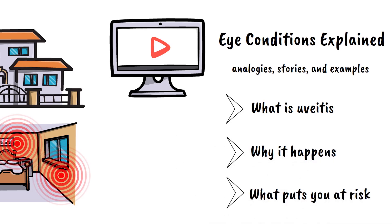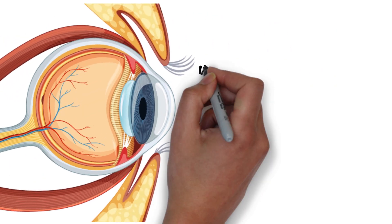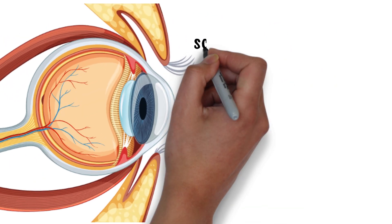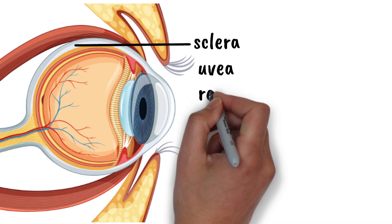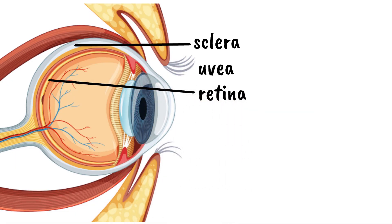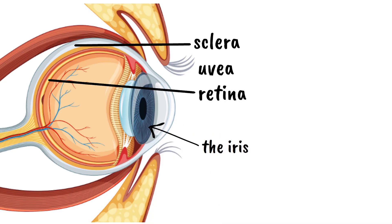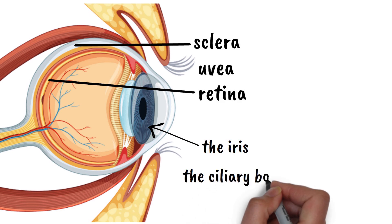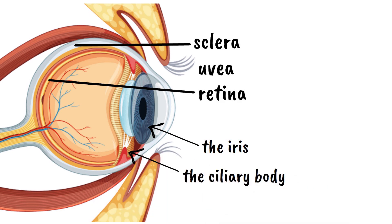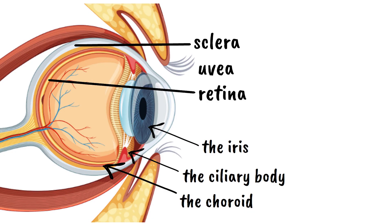First, let's understand what we're dealing with. The uvea is the middle layer of your eye, sandwiched between the outer white layer called the sclera and the inner light-sensitive retina. Think of the uvea as the eye's central heating and air conditioning system. It's made up of three main parts: the iris, which is the colored part of your eye that controls how much light enters; the ciliary body, which changes the shape of your lens so you can focus; and the choroid, which is packed with blood vessels that supply nutrients to your retina.